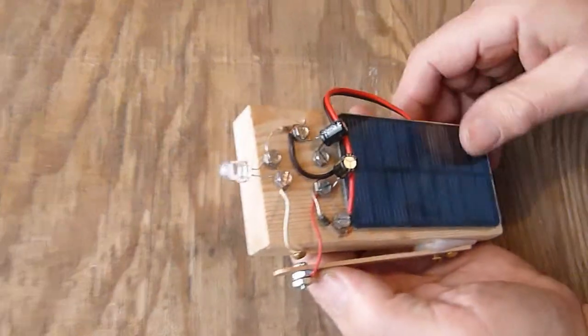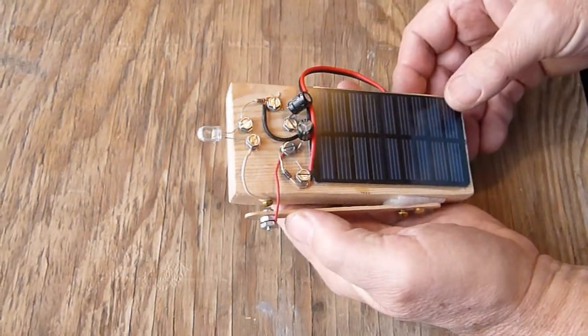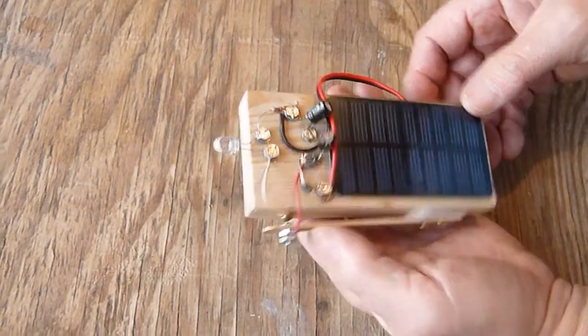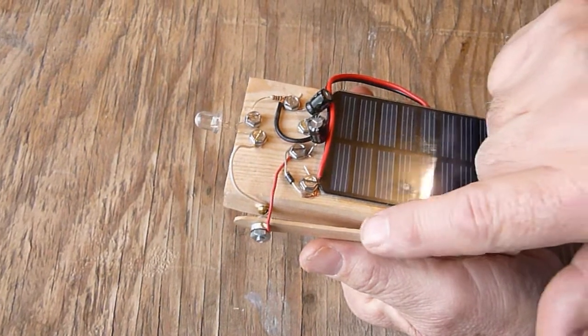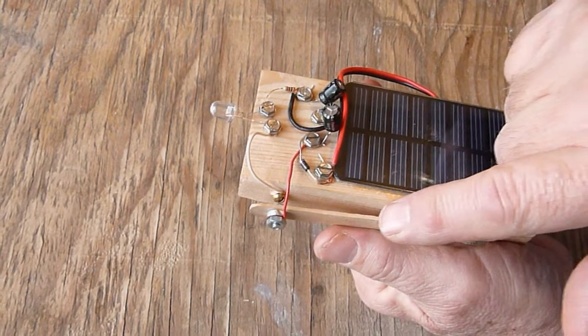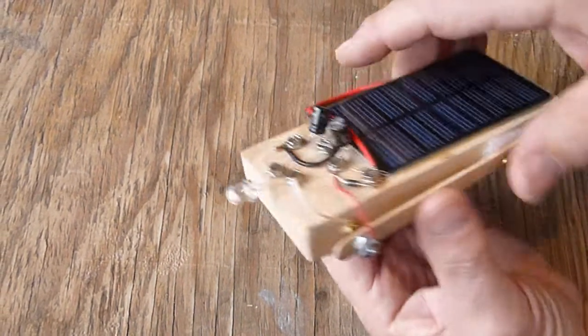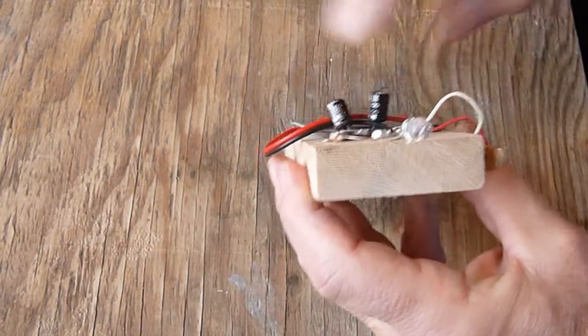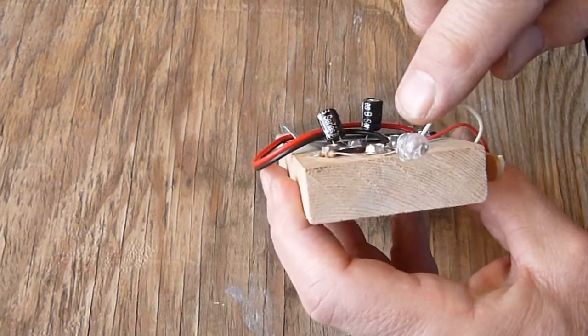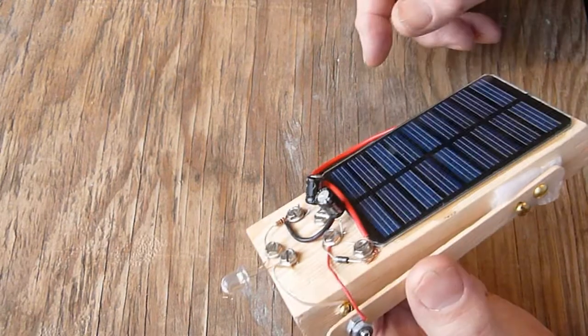Now we will demonstrate how this operates. Right now, here is the popsicle stick switch which was described in how to build in Episode 1 of this series. And we close it, and here is the LED, there is no light coming from it. This means these capacitors are discharged.